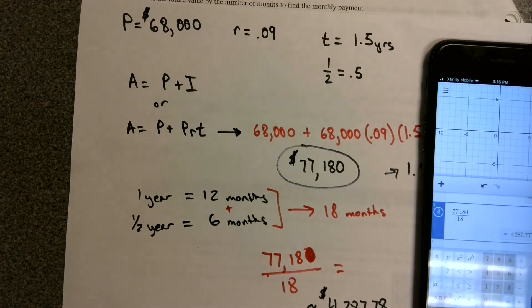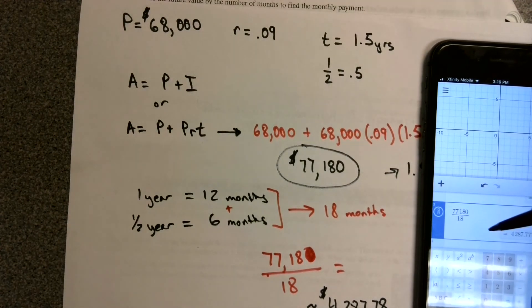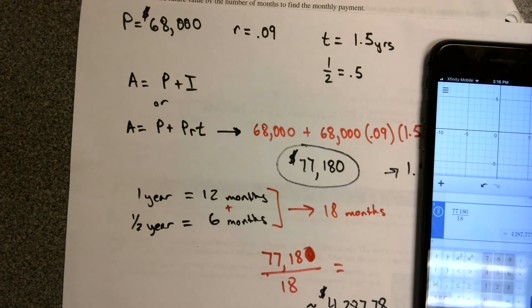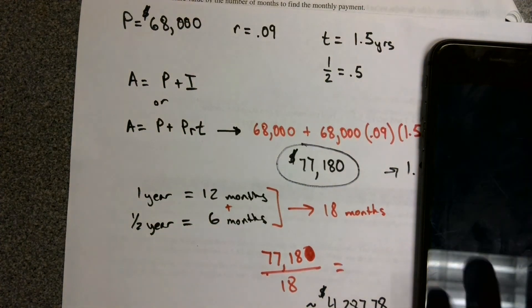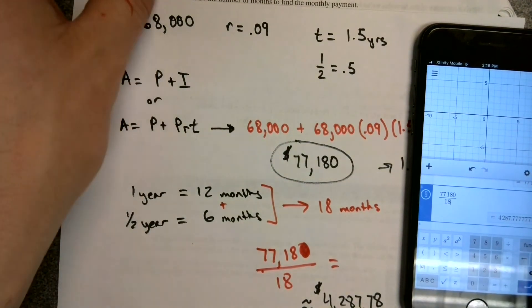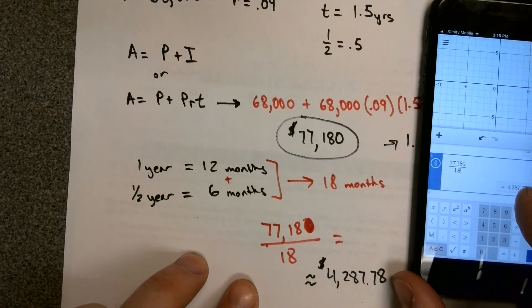That will give us a little bit extra. Our very last payment will be a couple cents short, probably $0.18 less. But this would be the monthly payment we have to pay each month in order to pay off this total balance that we owe.